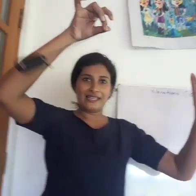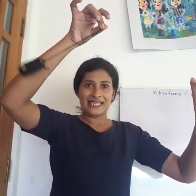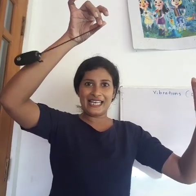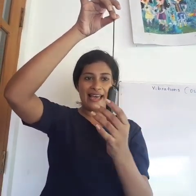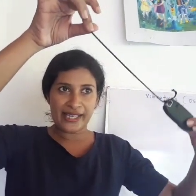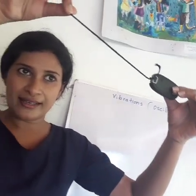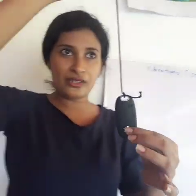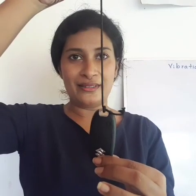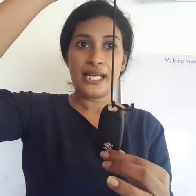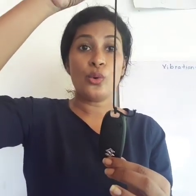Let's see the oscillation. Here, you can see it is moving. Taking a closer look: it has a mean position, it moves away in the first direction, comes back to the normal position, goes to the other direction, and comes back to normal. This is called a vibration or an oscillation.